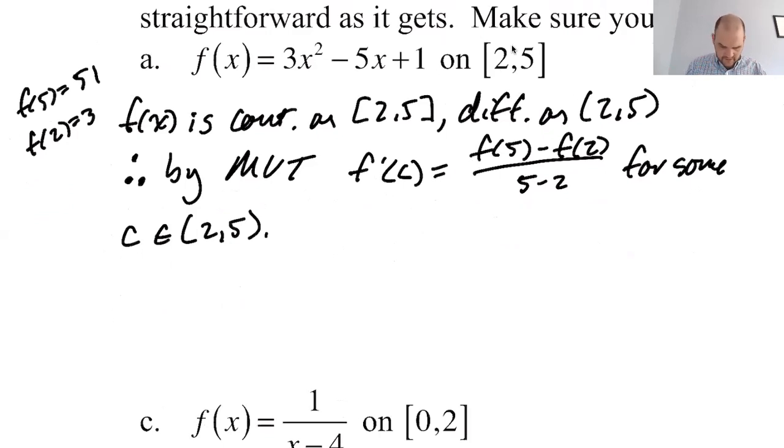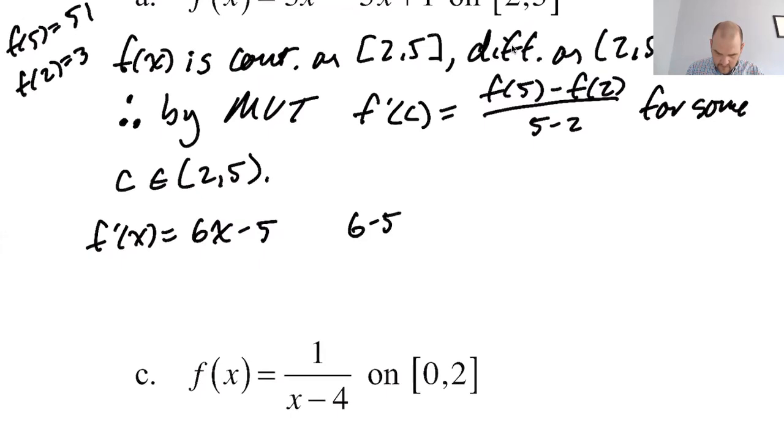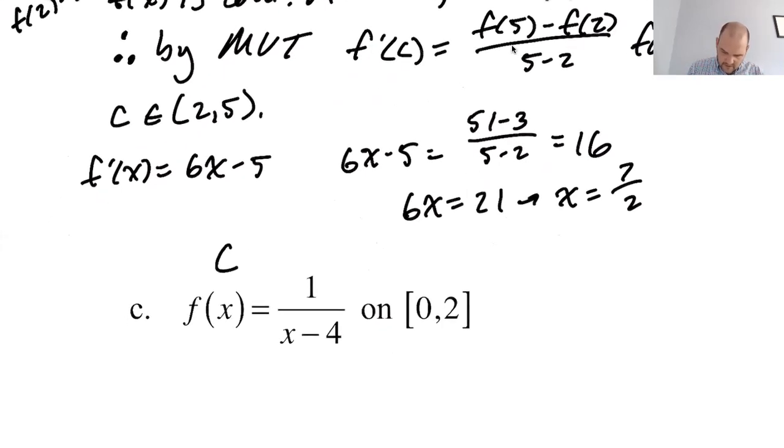f prime of x is 6x minus 5. I'm just riddled with doubts today. False starts, whatever. So what I always do is I always solve for x and then I say therefore C equals. So 6x minus 5 equals 51 minus 3 over 5 minus 2. So 48 over 3, so 16. So 6x equals 21. x equals 21 over 6, which is 7 halves.